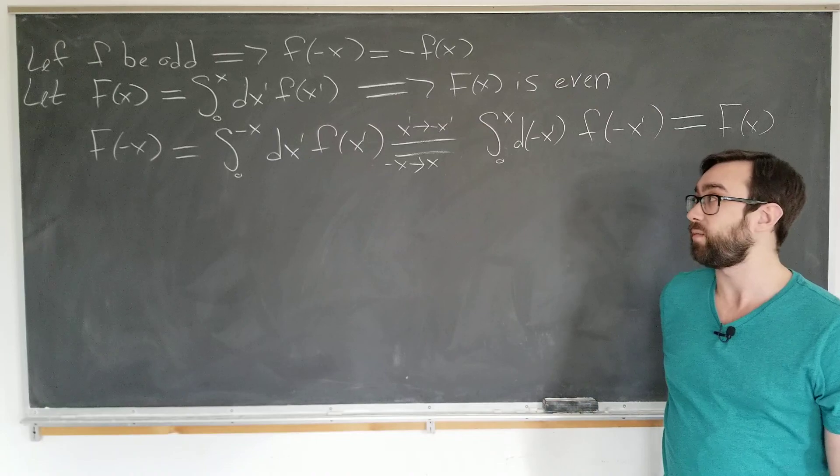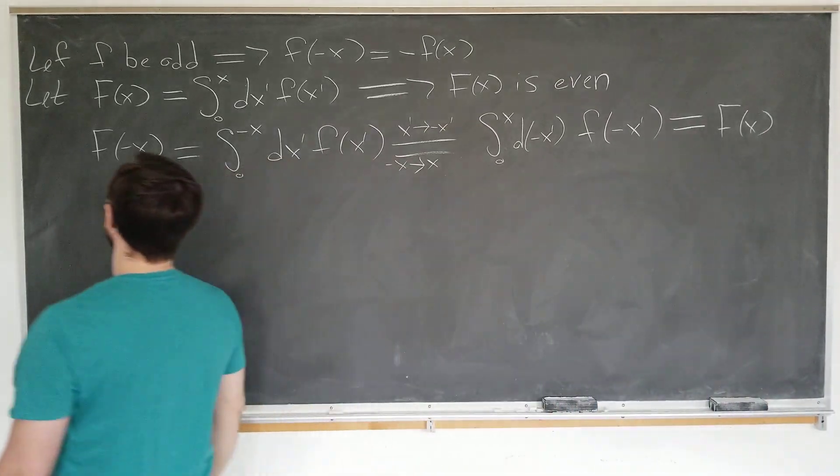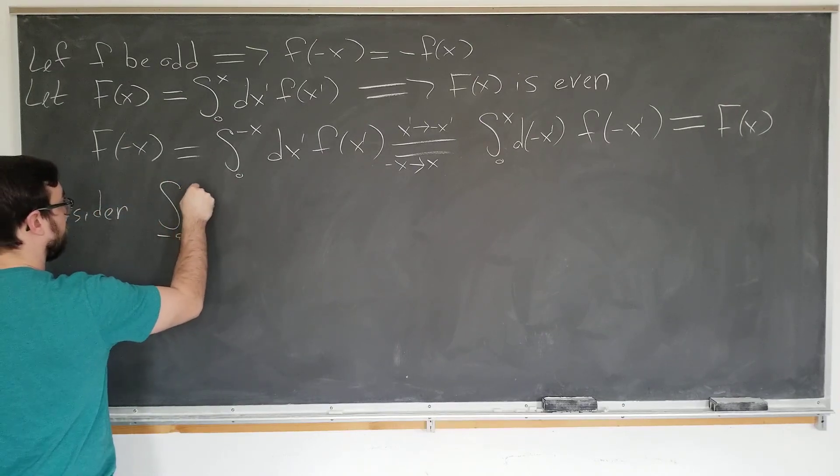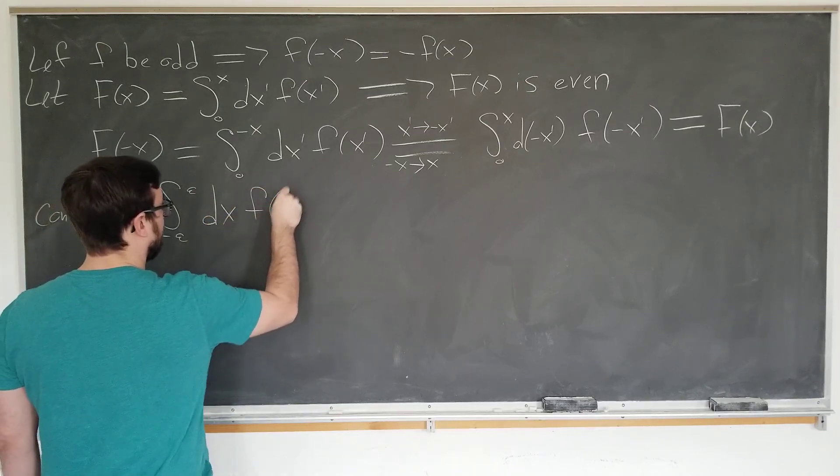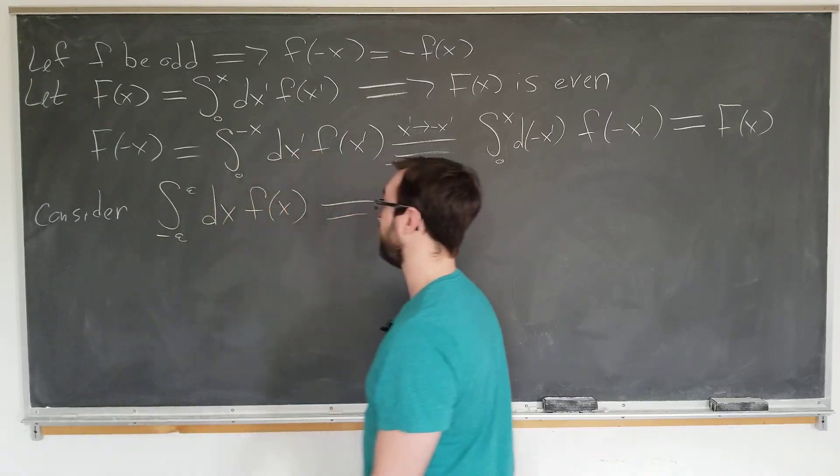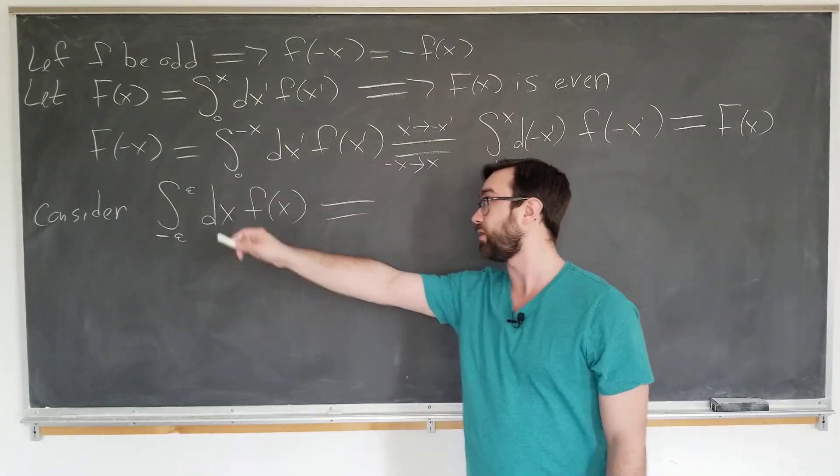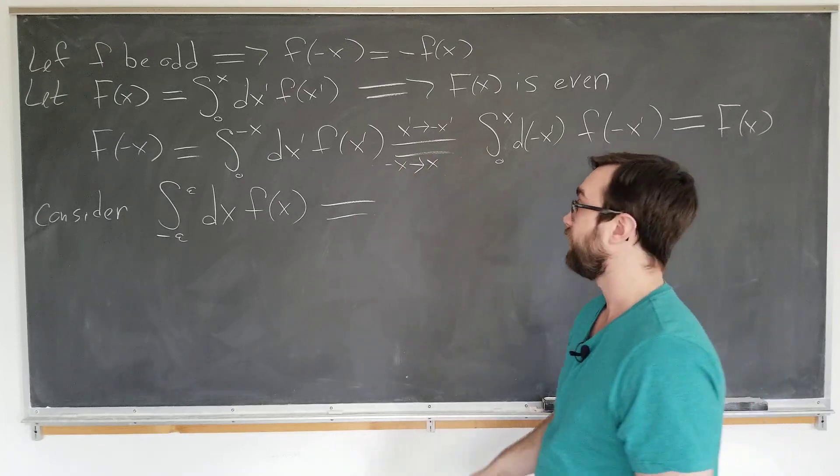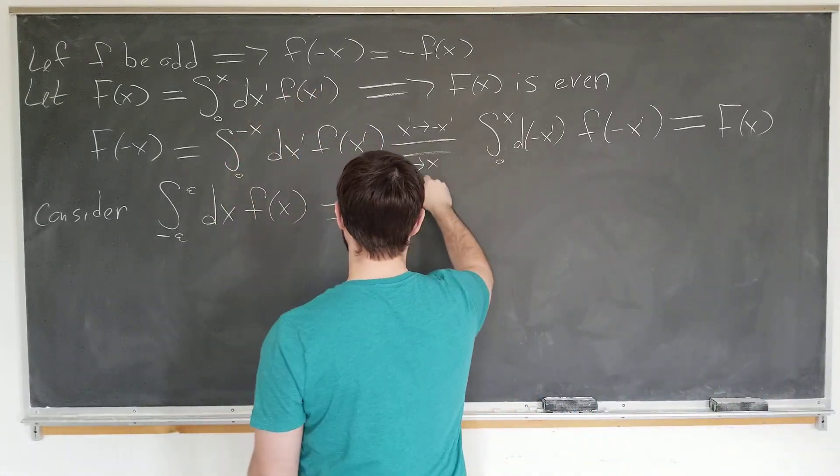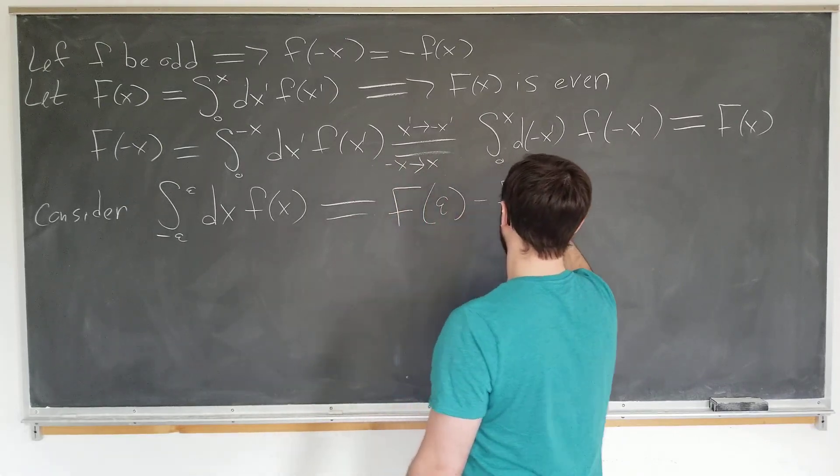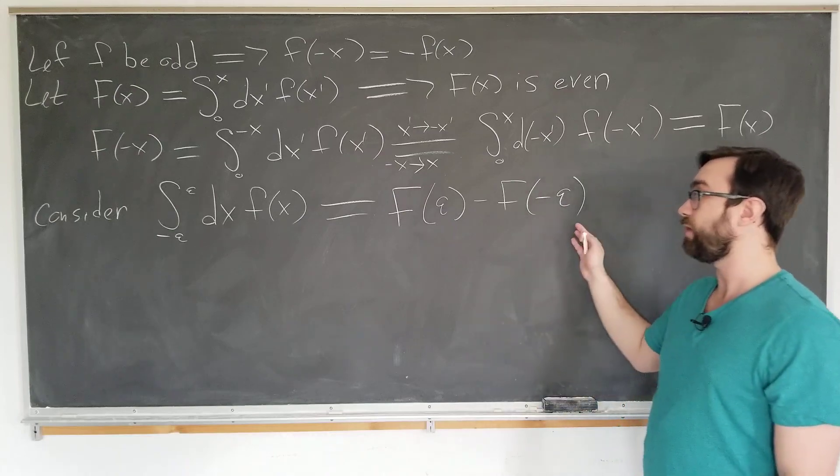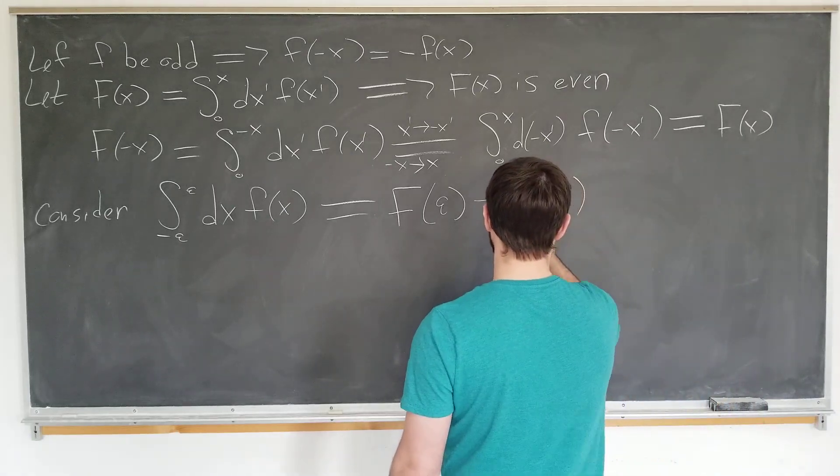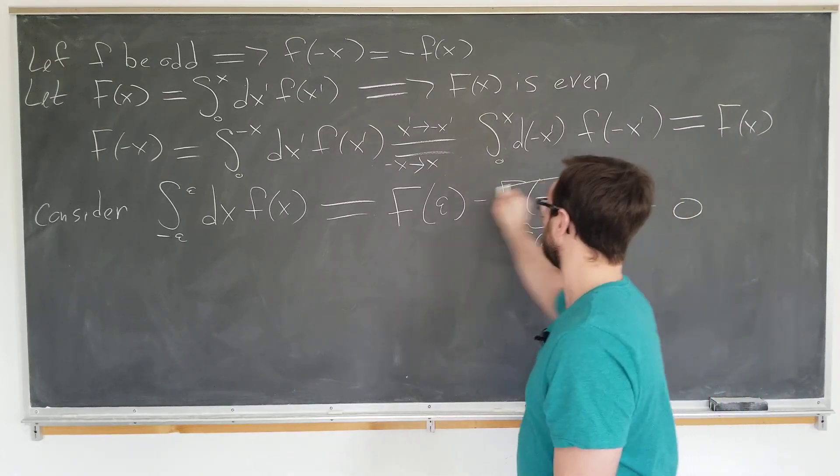So we can now use this to evaluate the integral over the symmetric domain. We are going to consider integral from minus a to a with respect to x of f of x, which we know from the fundamental theorem of calculus is just the antiderivative of this function evaluated at the endpoints and subtracted. And we already know this property about the antiderivative. We have defined the antiderivative here. So we'll just plug it in here. This is F of a minus F of minus a. And now we can use the fact that we just showed, we showed that the antiderivative is actually even. So this is just F of a, of course. So the whole thing is equal to zero.